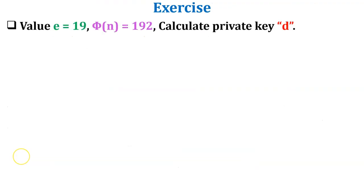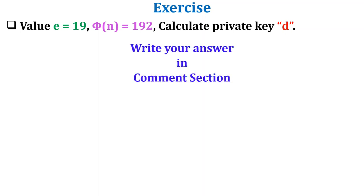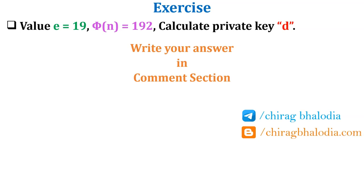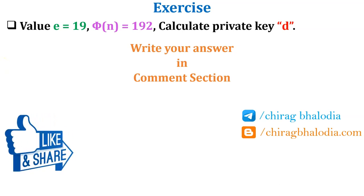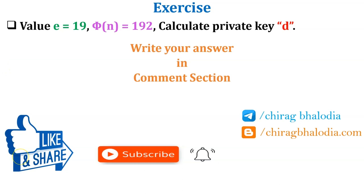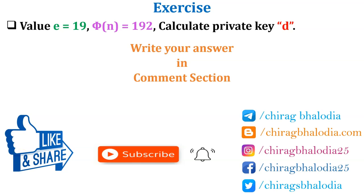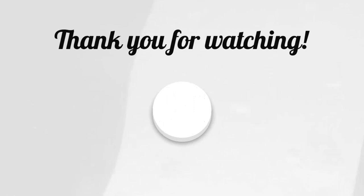Now there is one exercise for you: e = 90, phi of n = 192. Calculate private key d. You should find value d using all three methods and check whether your answers match. Write your answer in the comment section. If you have any queries, you can join my Telegram group. Follow my blog for video materials. If you like this video, please hit the like button, share with others, and don't forget to subscribe. Follow me on social media — all links are in the description. Thank you for watching.